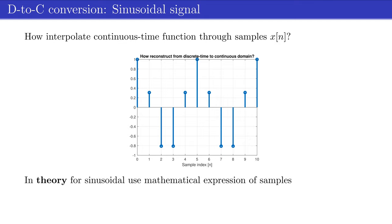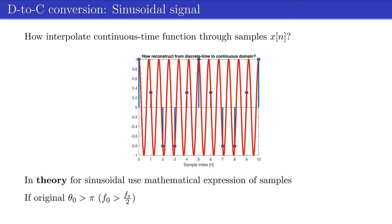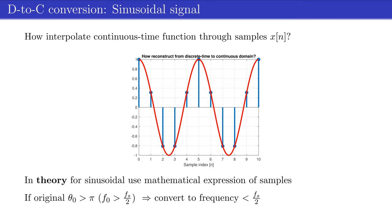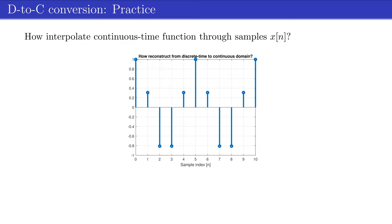Thus, when we have a mathematical expression, we can use this procedure to describe the conversion process. In case the relative frequency theta 0 is larger than pi, or equivalently when the original absolute frequency f0 is larger than fs over 2, the conversion uses the aliased frequency which is smaller than fs over 2.